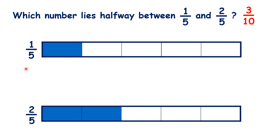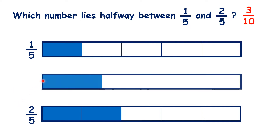And we can show this visually. Here we can see 1 fifth and 2 fifths, and we want to know the fraction right in the middle of them. If we split our fraction bar into 10, we can see that we have 3 tenths.